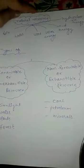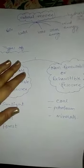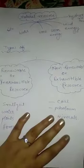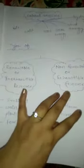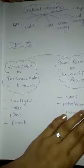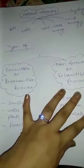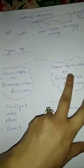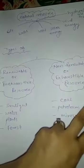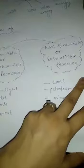Now, the types of natural resources. What are the two types of natural resources? We have two types: the first one is renewable or inexhaustible resources, and the second is non-renewable or exhaustible resources.